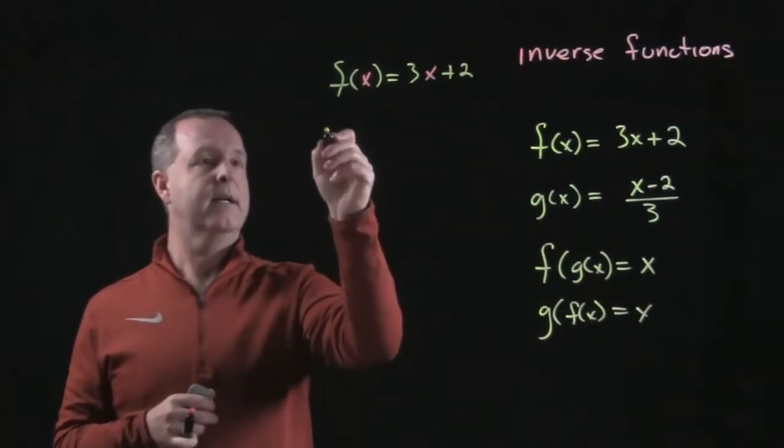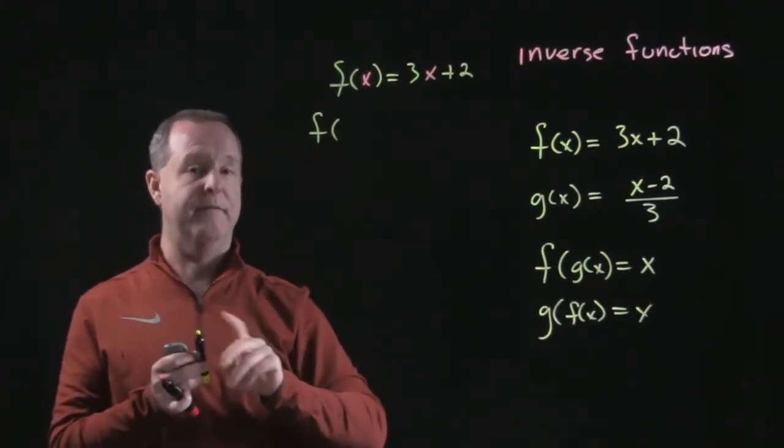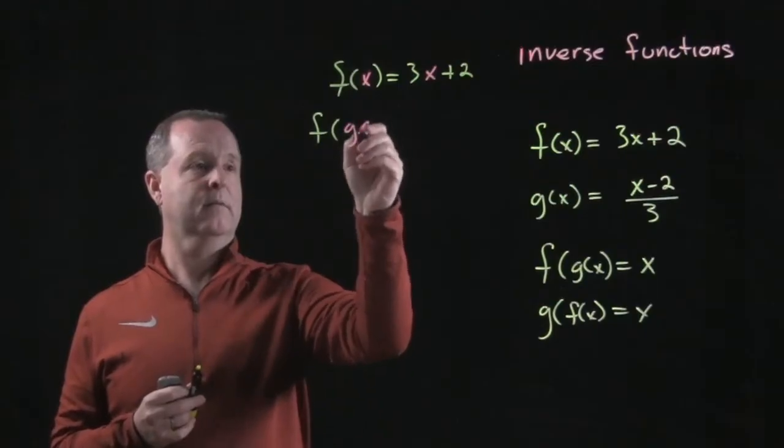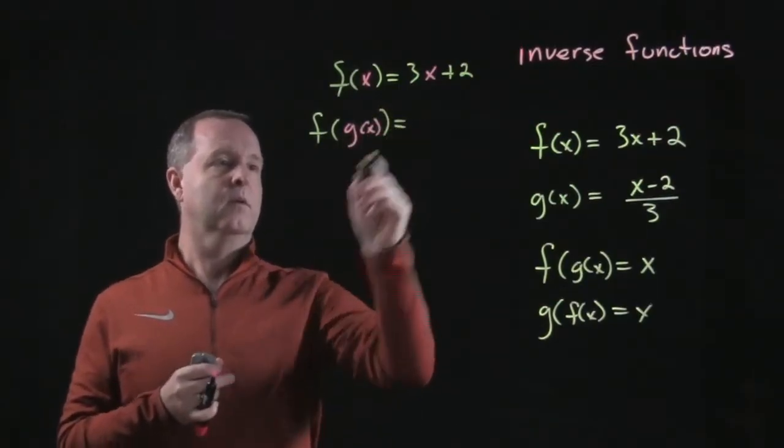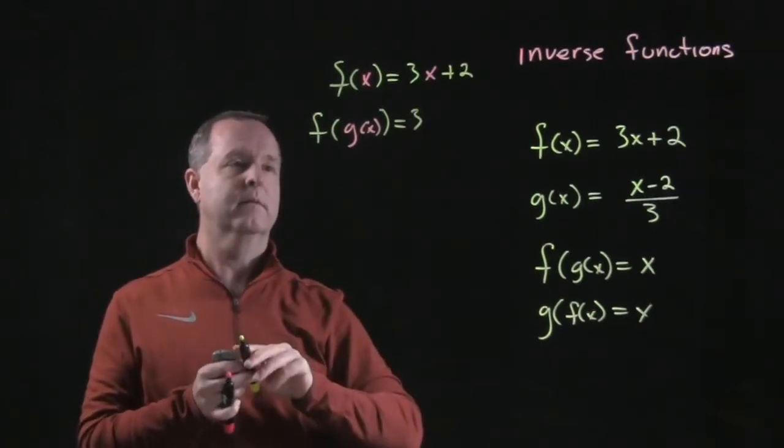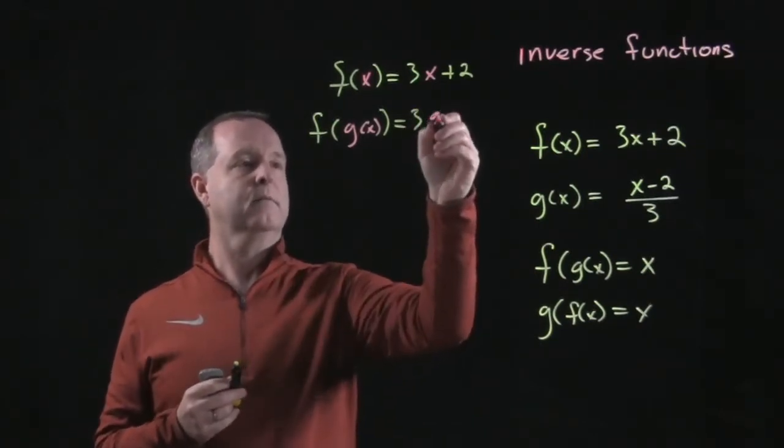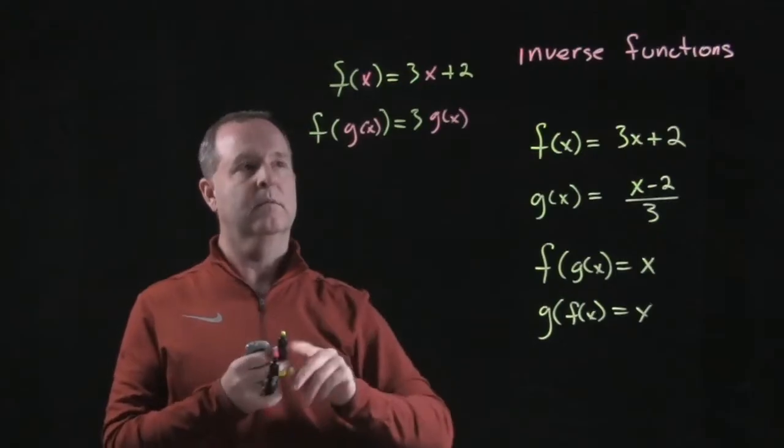So f of g of x is saying let's evaluate that function at g of x, which equals 3 times g of x plus 2.